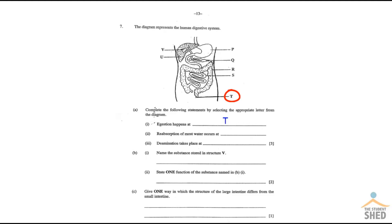The next one asks you in which structure does reabsorption of water happen. So where does that happen in the human alimentary canal? The answer there is going to be the large intestine or the colon, and the answer to that one then is R.